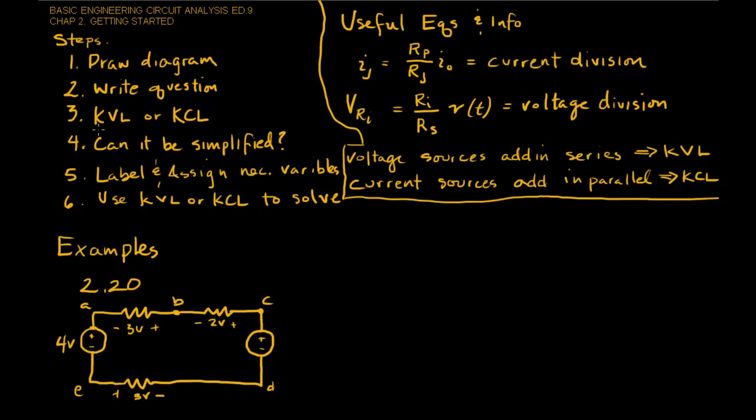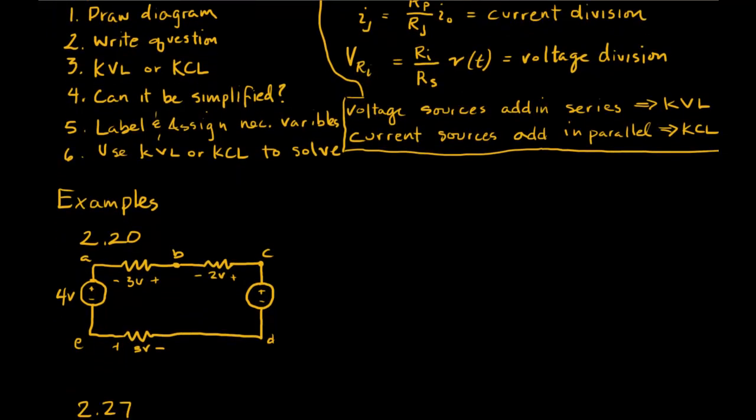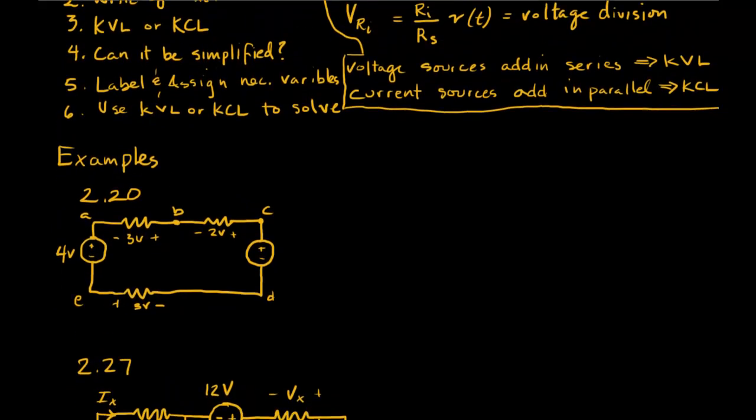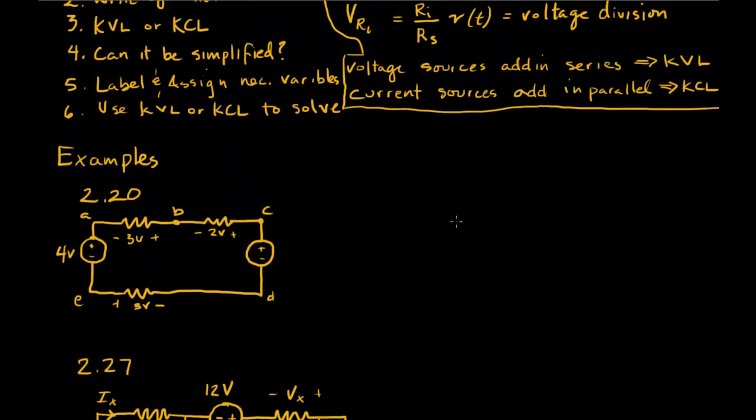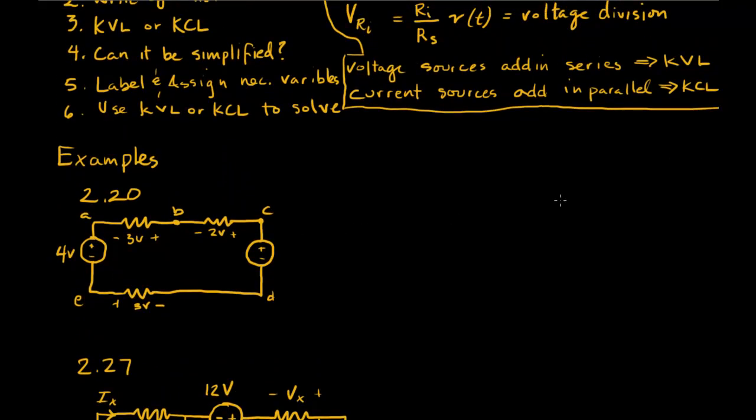Then you have to determine whether you're going to use KVL or KCL for the problem. There are basically two various kinds of circuits that you'll see in this chapter. For KVL, you'd be looking for loops. And for KCL, you'd be looking for node pairs. So here's a loop, probably going to do KVL.